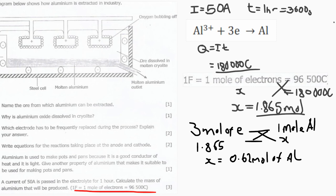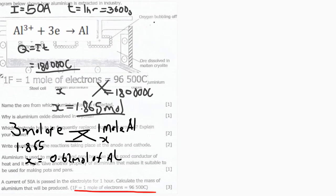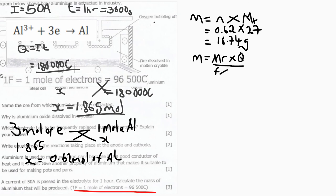And we know that mass is equal to the number of moles multiplied by the relative atomic mass. Hence, 0.62 multiplied by 27 and we get 16.74 grams. On the other hand, we can also use the formula: M is equal to the molar mass multiplied by the charge over Faraday's constant times the iron charge of the metal.